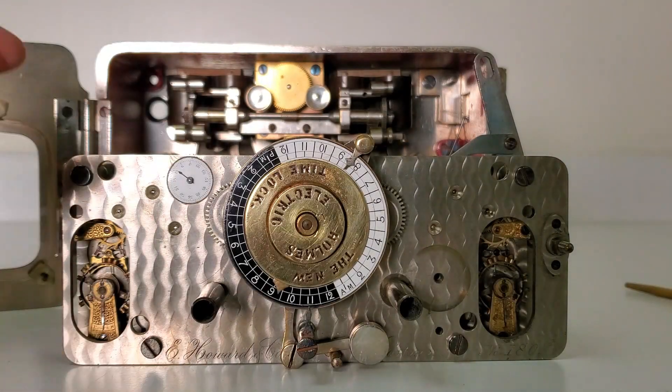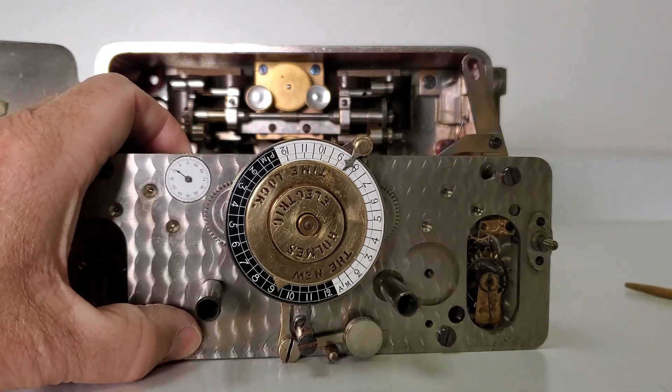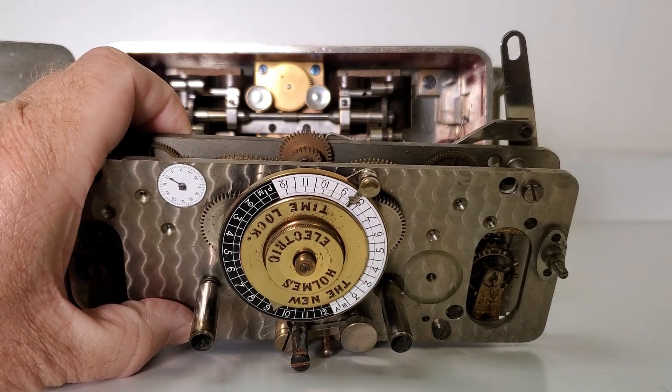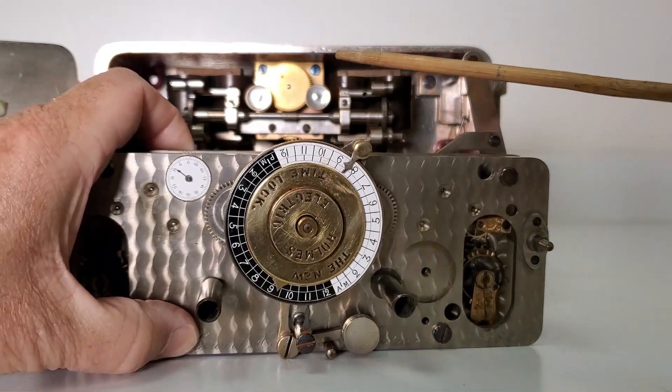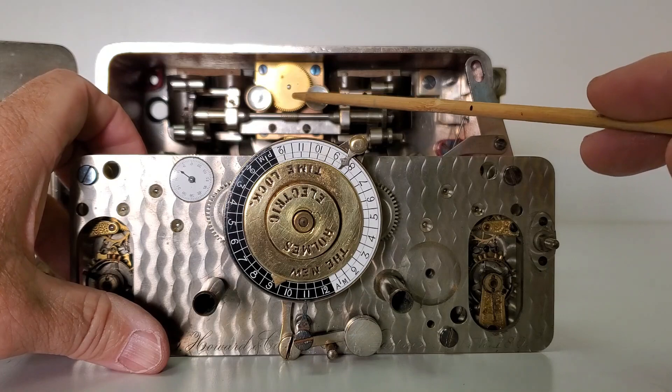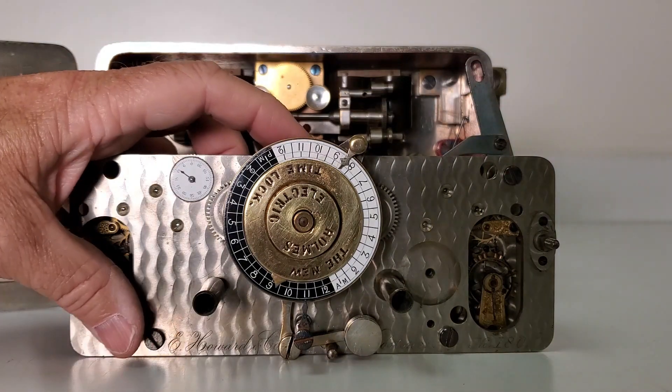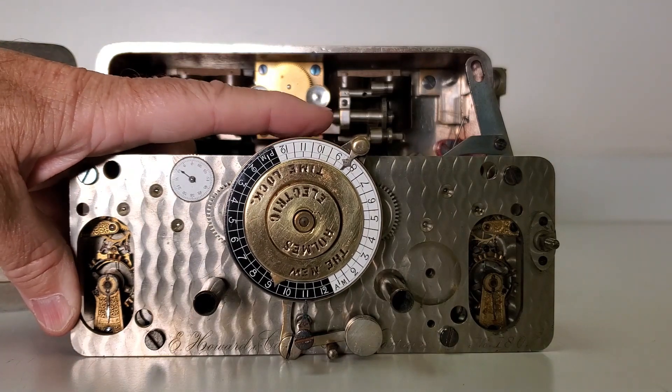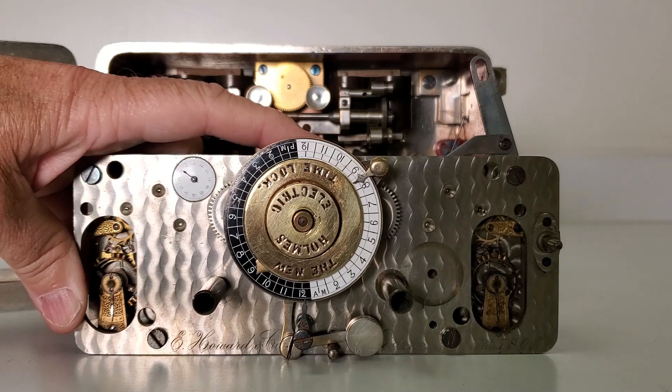One can see here the movement in the front, and if I tip this over just a little bit, you can see the gear that would be engaged here, that would then be engaged in the gear in the back. Ultimately this would move this gear just enough to start to move this dial.